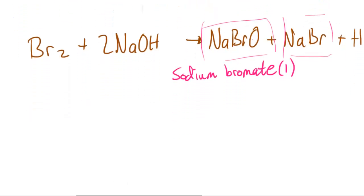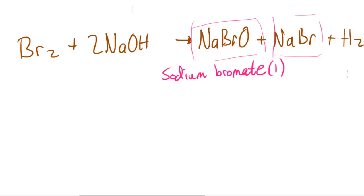So that's how a disproportionation reaction can occur. And in the next video, I'll be taking a look at how this can happen with chlorine to form bleach. I hope you guys found this video helpful and I'll see you guys in the next video. Thank you.